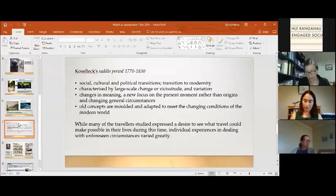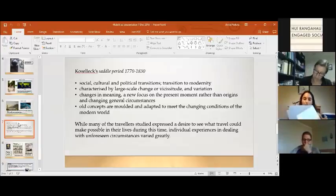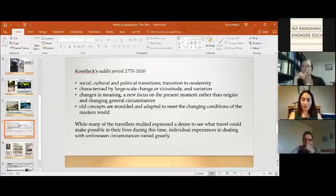He does so by detailing the mobilization of people, new ideas, and ideologies during the Saddle period, which took over from the preceding time of relative stability, or you might call this mobility singular. Specifically Koseleck takes an etymological approach to observe the way in which the meaning of words changed as a result of the wider social, cultural, and political transitions occurring during this significant era in the transition to modernity. Koseleck emphasizes that the semantic overhaul in the meanings of words and categories taking place during the Saddle period was characterized by large-scale change or vicissitude and variation.